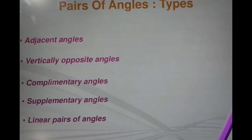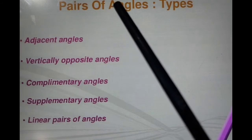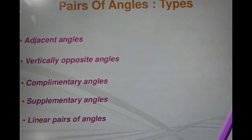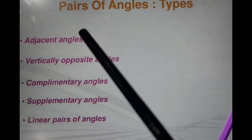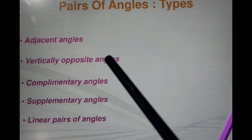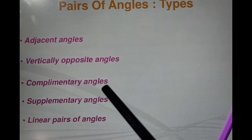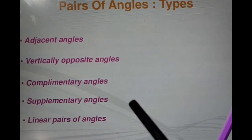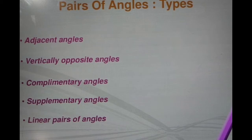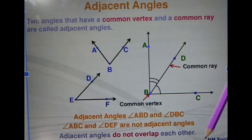Next, related angles — in which we consider the pair of two angles together. These are named as adjacent angles, vertically opposite angles, complementary angles, supplementary angles, and linear pair of angles. We have already discussed all these but just to recap, we note down all these angles. First are the adjacent angles.